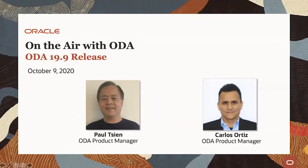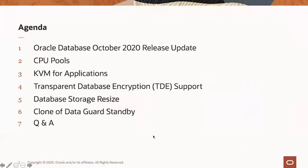Welcome to our October 9th, 2020 ODA webcast. Today we're going to have a very exciting topic to talk about: ODA 19.9 release. Our agenda includes the latest October 2020 release update for the Oracle database, the two new main features — CPU pools and KVM for applications — plus additional features such as TDE transparent database encryption support, storage resize, and clone of DataGuard standby. Then we'll leave some time for Q&A.